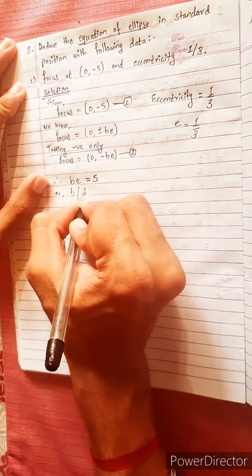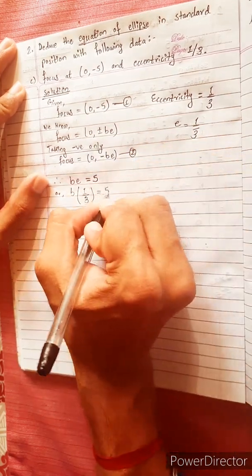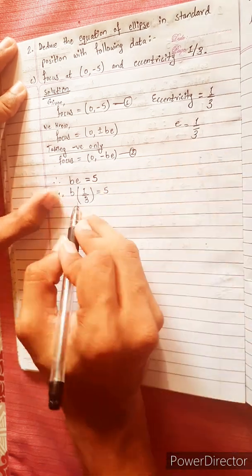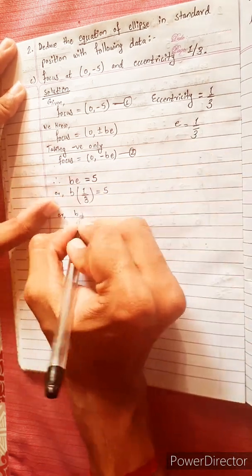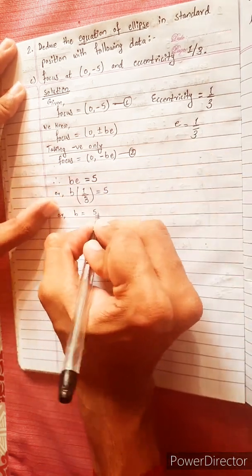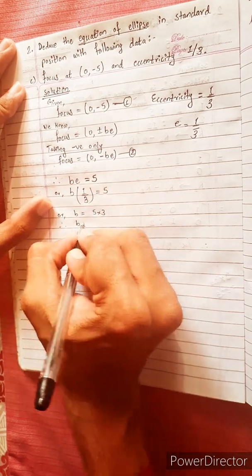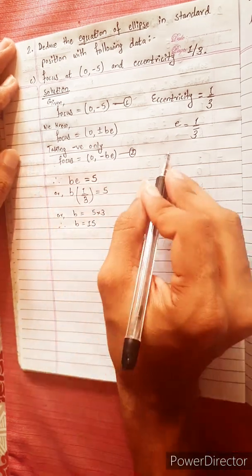b into eccentricity: 1 by 3 equals 5. So b equals 5 into 3, therefore b equals 15. b is 15.